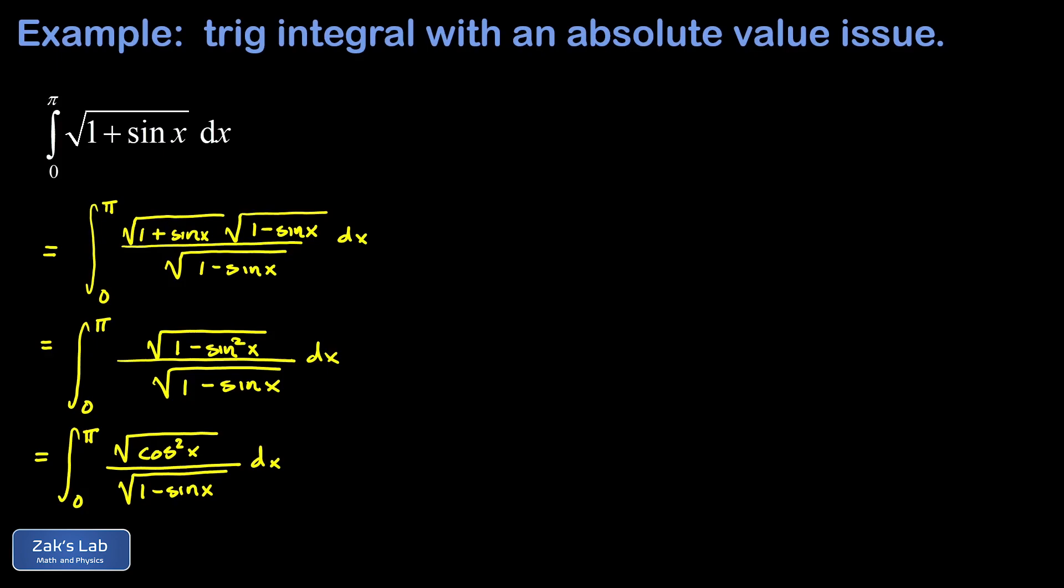Then you square root it and you get the same magnitude as whatever you're squaring in there. We get the same magnitude as cosine x but it's guaranteed to be positive. In other words, we're talking about an absolute value and this has to be treated very carefully.